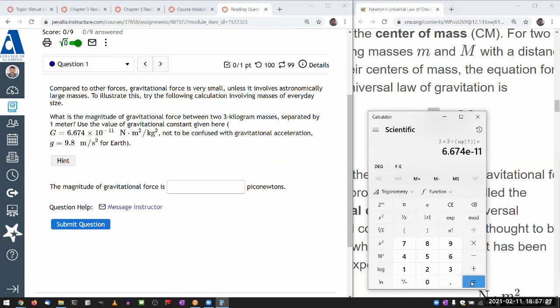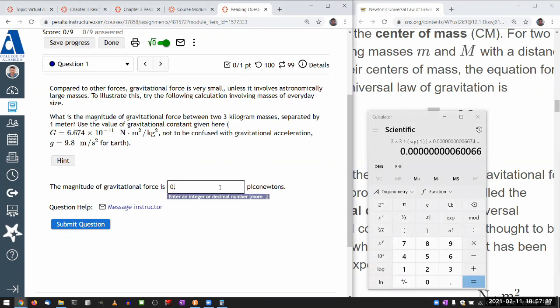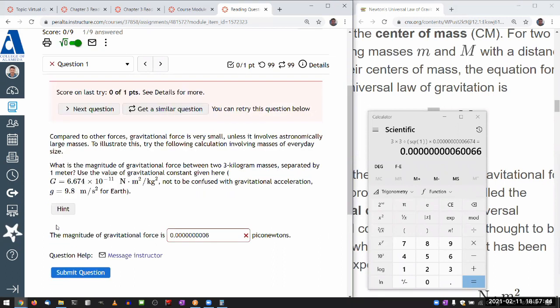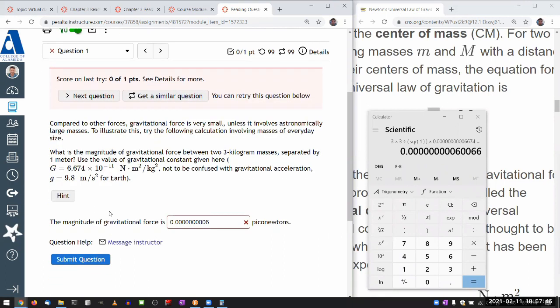So, when I hit equal sign, this is what I get. And now, here's where you do have to be careful. If I were to simply put this in, 0.000000000006, it'll say it's wrong. And it's not just because I missed a 0 or anything like that.